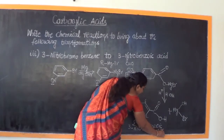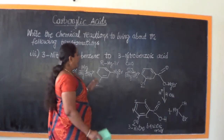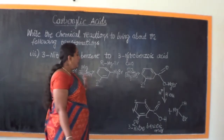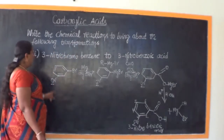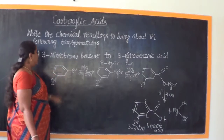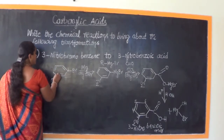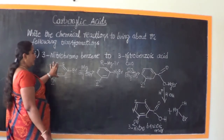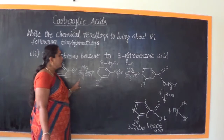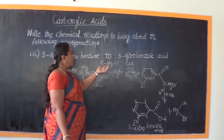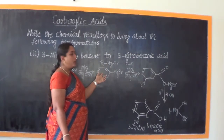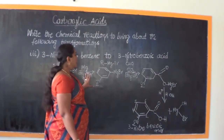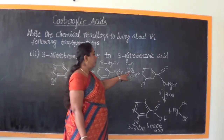This conversion started from a Grignard reagent. The first step involved obtaining the Grignard reagent. To recap: 3-nitrobromobenzene (first, second, third carbon having the nitro group) was first treated with magnesium in dry ether to obtain the Grignard reagent with formula R-MgBr, where R is the phenyl group with the nitro group attached.